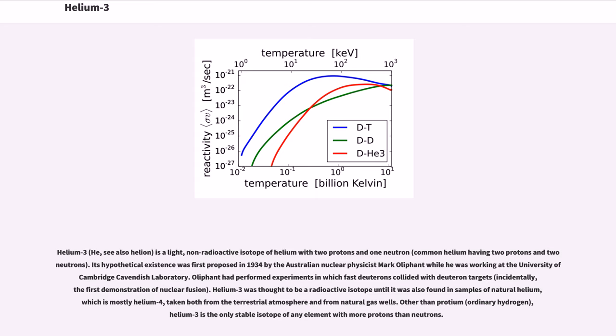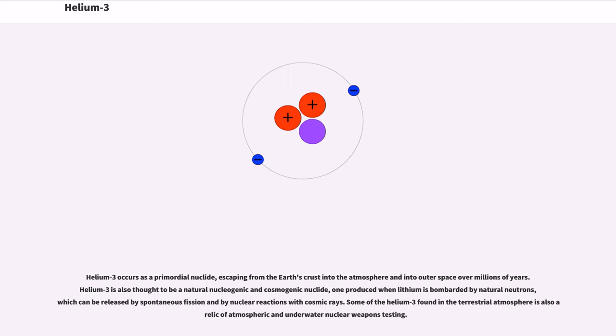Helium-3 was thought to be a radioactive isotope until it was also found in samples of natural helium, which is mostly helium-4, taken both from the terrestrial atmosphere and from natural gas wells. Other than protium, ordinary hydrogen, helium-3 is the only stable isotope of any element with more protons than neutrons.